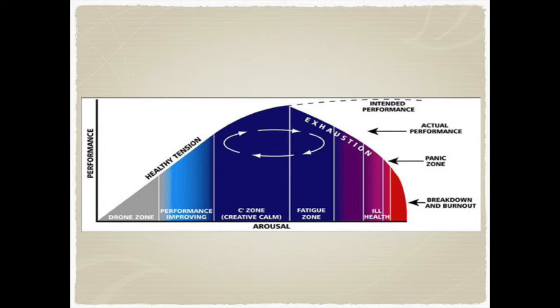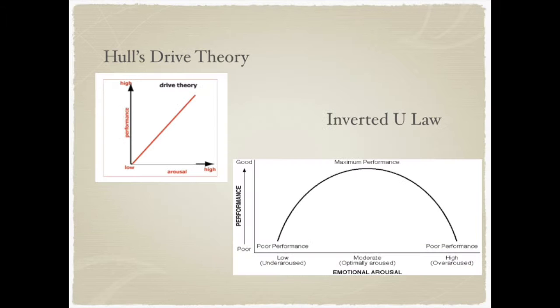The level of arousal and the way in which we behave affects our motivation and therefore affects performance. There are two different types of arousal and performance theories: Hull's Drive Theory and the Inverted U Law.